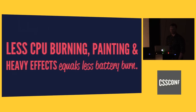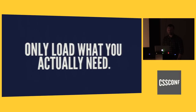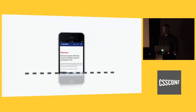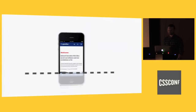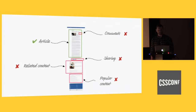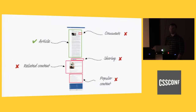Less CPU burning, painting, and heavy effects equals less battery burn. Here's a rule: only load what you need. This comes from Patrick Heyman's talk at CSS Conf EU. Patrick works for The Guardian, and he talked about what CSS you need to deliver your site and what's above the fold. At The Guardian, they did a study of what they consider important content — in their case, the article, the story. That's their product, the really important part of the page. The comments? Not really — never read the comments anyway. Sharing, related content, and popular content are not important.